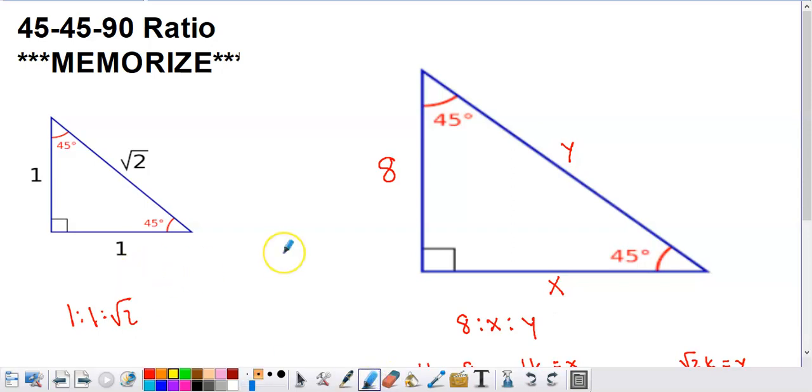So in the last video we talked about the 30-60-90 ratio. We looked at some similar triangles, did a quick example problem, talked about the SAT a little bit. In this video we're going to do something very similar, but this time we're going to be discussing a different set of values. And this set of values is for the 45-45-90 right triangles that you might be encountering.